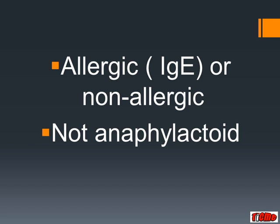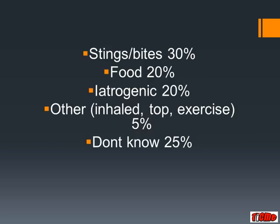In Australia, the main causes of anaphylaxis break down as follows: stings and bites make up most of them. In Tasmania particularly, the jackjumper ant is responsible for lots of anaphylaxis. Food is very important, particularly dairy and peanuts. We in medicine cause about 1 in 5 anaphylactic reactions, particularly with antibiotics such as the beta-lactams. Other known causes include inhaled or topical allergens and exercise-related non-allergic anaphylaxis. But we often don't find the cause — that's up to a quarter of cases.